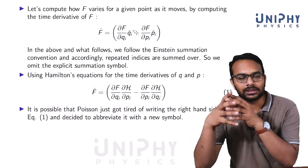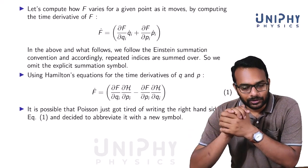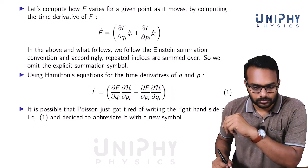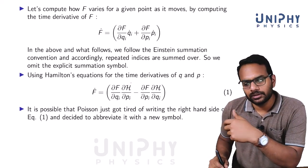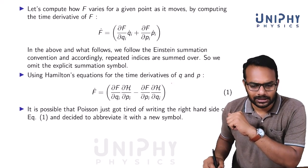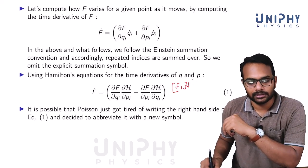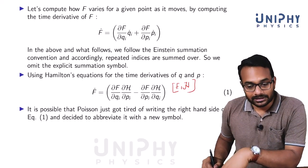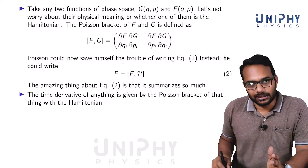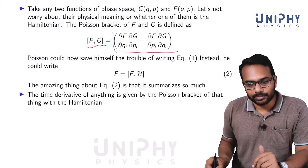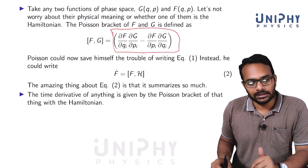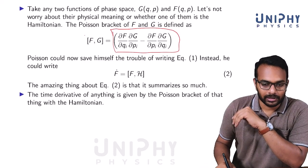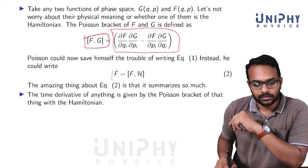We do not know exactly why Poisson introduced his brackets, but we can imagine a possible motivation. When working with physical systems, such expressions always appear and look a bit complicated. Poisson thought: let's find a shorthand notation. He said let's write this kind of expression as {f, H}. For obvious reasons he called it the Poisson bracket. The general definition: {f, g} = (∂f/∂q_i)(∂g/∂p_i) − (∂f/∂p_i)(∂g/∂q_i).